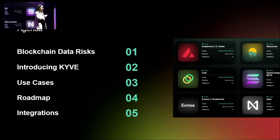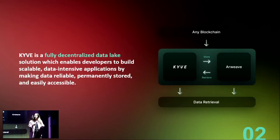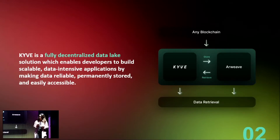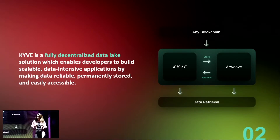This is why we created Kyve. Kyve is a fully decentralized data lake. Imagine it as a big lake of data where we connect to different L1s and L2s. We get the data and feed it to our proof-of-stake network, which validates it and stores it onto Arweave.